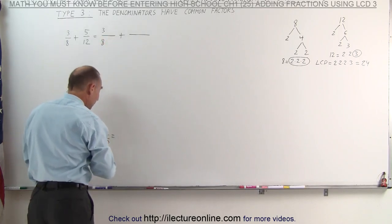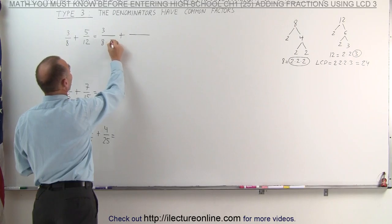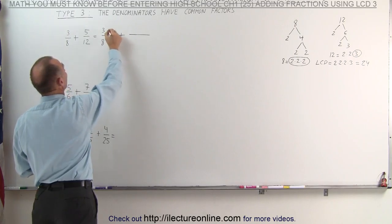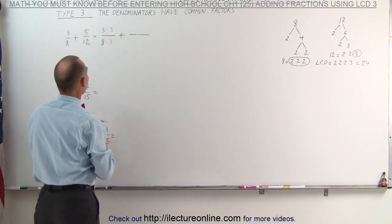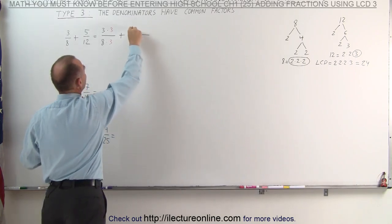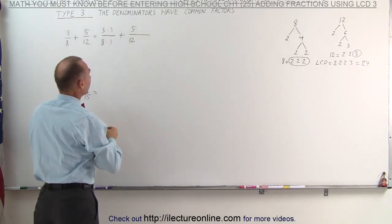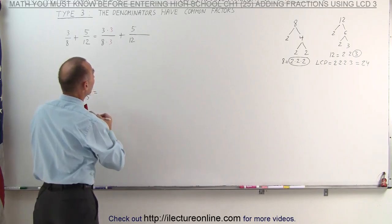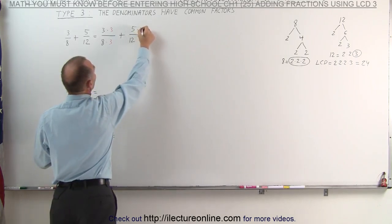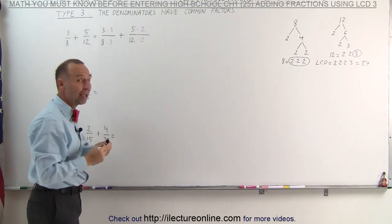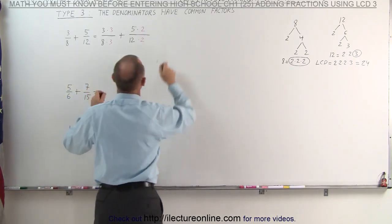That means we have to change these fractions so that the denominators now become 24. We start with the first fraction, 3 eighths. To make the denominator equal to 24, I must multiply it times 3, which of course I must also do with the numerator.